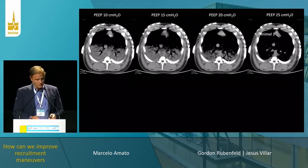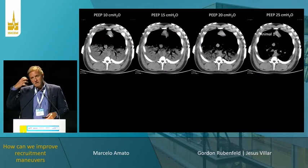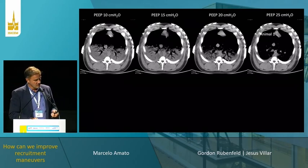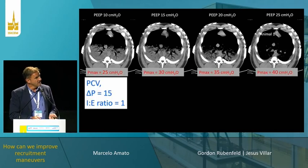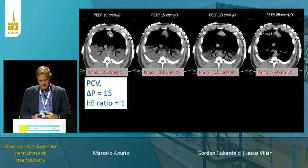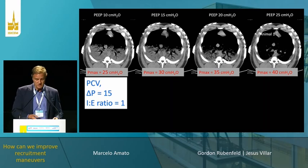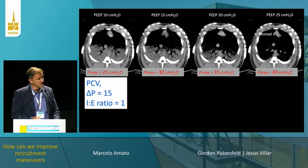What image do we have in mind? High recruitability looks like this — an animal or patient like this. Typically, we like to do recruiting maneuvers with fixed delta pressure. This is already proven to decrease the chances of barotrauma or ventilator-induced lung injury.